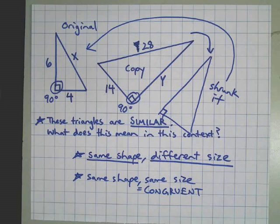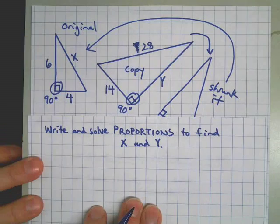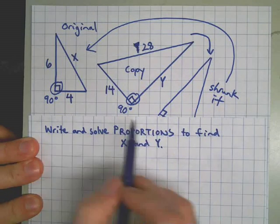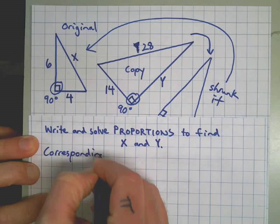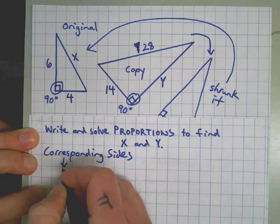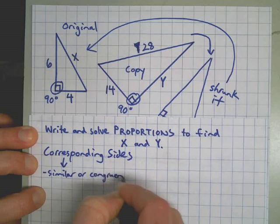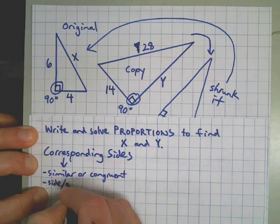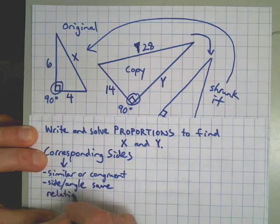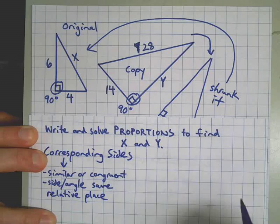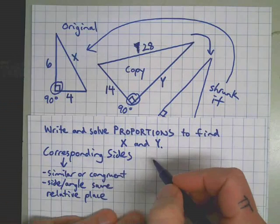Now let's move on. We want to write and solve proportions to find x and y. This can be kind of challenging because we had to flip it and shrink it to find which sides are corresponding. Let's find the corresponding sides to these two shapes. Corresponding means we have to have a similar or congruent shape, which we have - these two are similar - and the side or the angle or any other piece of one has to be in the same relative place on the other. Same relative place meaning after we flip it and shrink it and move it and get it lined up the same way, the corresponding side will be in the same place.